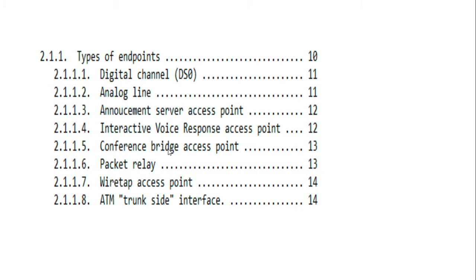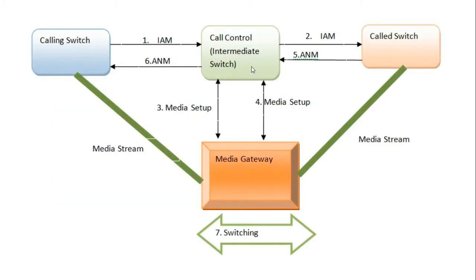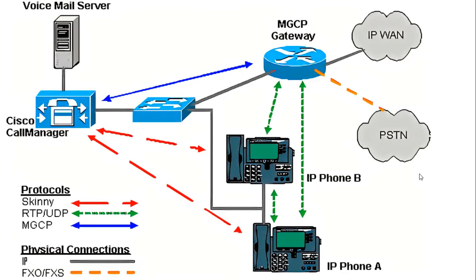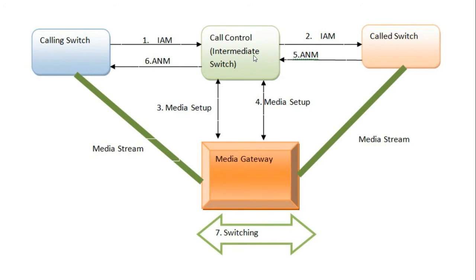When you establish a call, you have a signaling gateway and a media gateway. The signaling gateway mainly controls signaling like IAM, ACM, and ANM. The media flows to a separate media gateway server, and the control of that media gateway is done by MGCP. It sends various commands to establish the media connection and then the media stream flows.